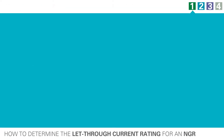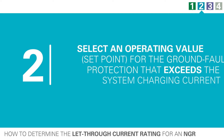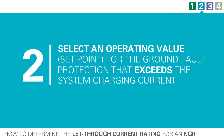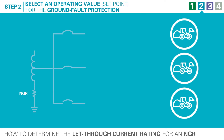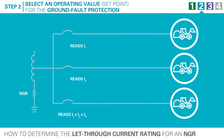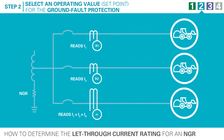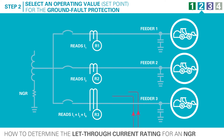Step two in determining the let-through current is to select an operating value or set point for the ground fault protection that exceeds the system charging current. If the operating value of a ground fault relay is less than the charging current of the feeder it is protecting, it will cause a nuisance trip.